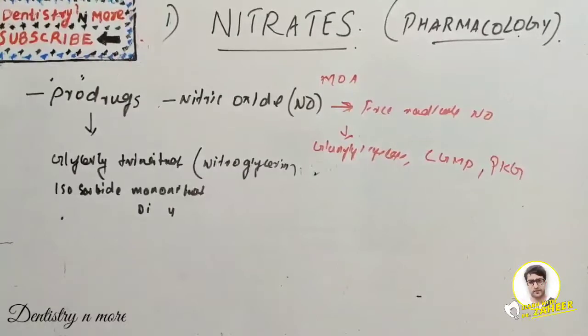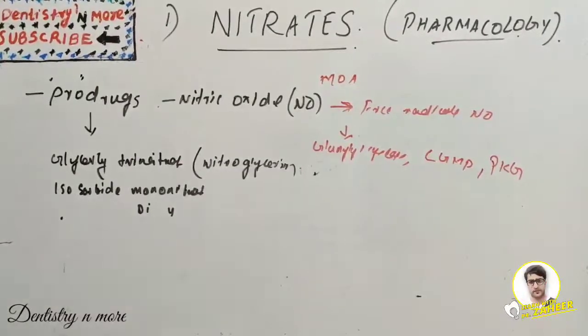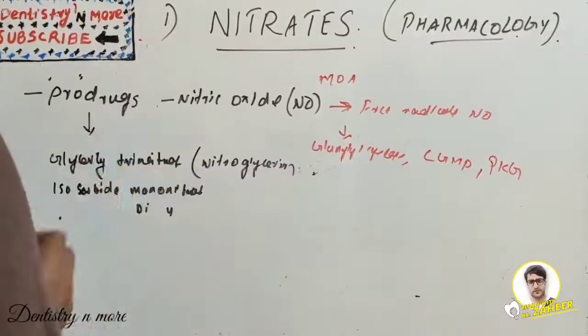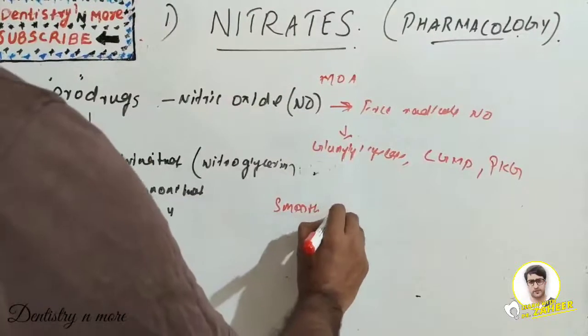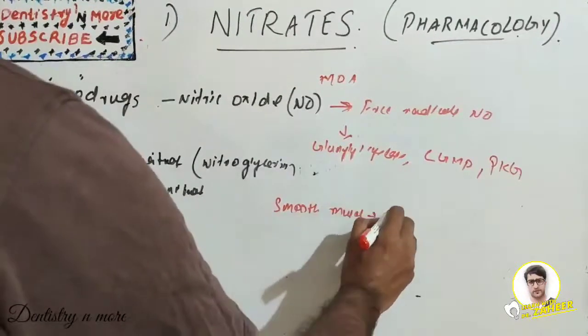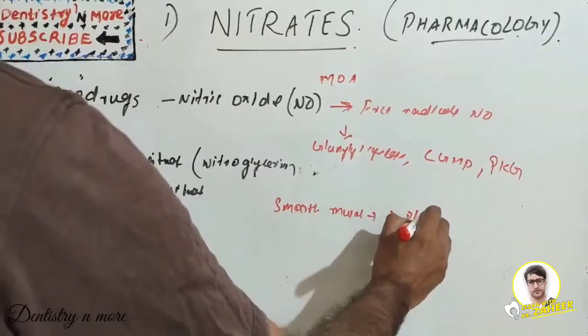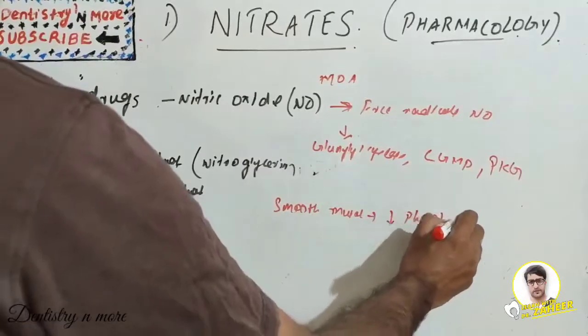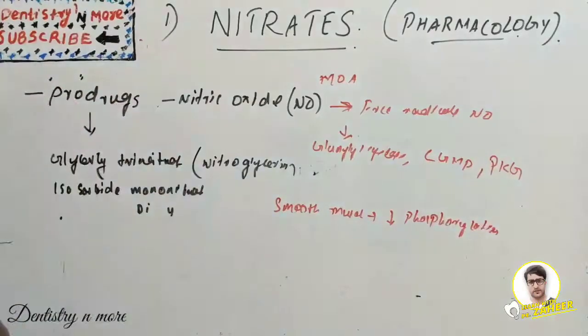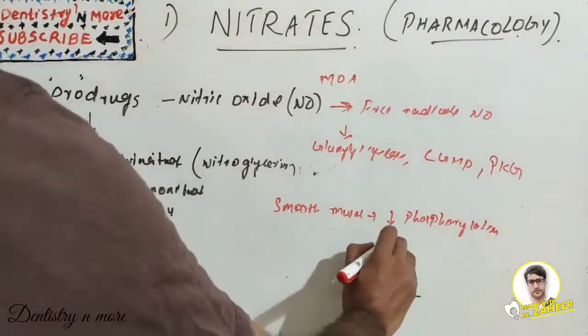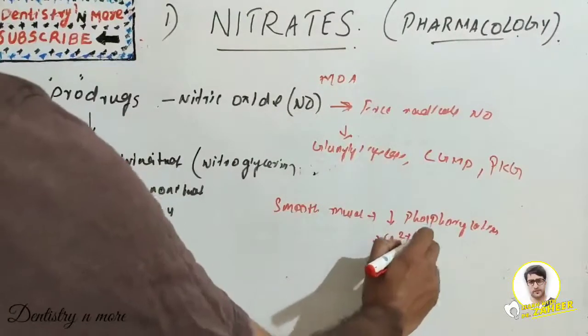In smooth muscles, what happens is there will be reduced phosphorylation of myosin light chain. In smooth muscles there will be reduced phosphorylation of myosin light chain and reduced calcium concentration in cytosol.